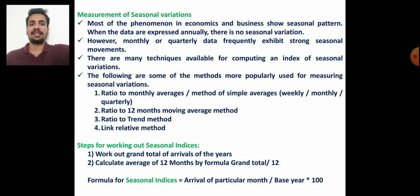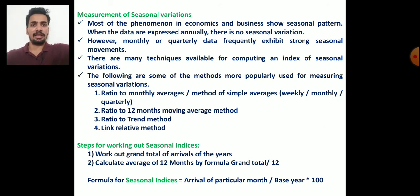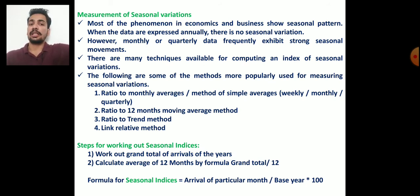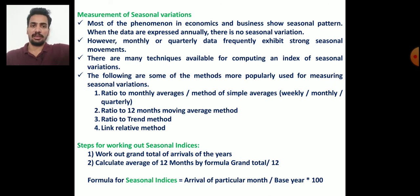There are many techniques available for computing an index of seasonal variation, that is, seasonal indices. The following methods are more popularly used: first, simple average method; second, ratio to 12-month moving average method; third, ratio to trend method; and fourth, link relative method.